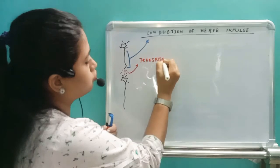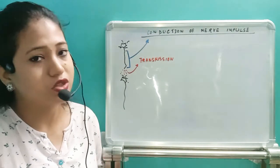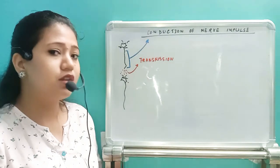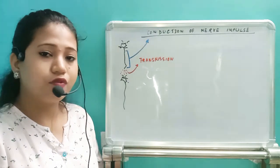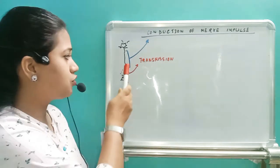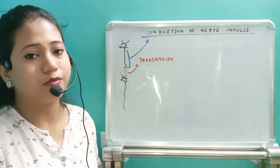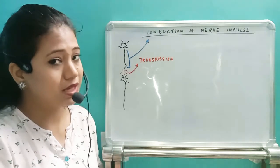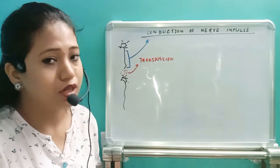So remember these two words — conduction and transmission. We have two mechanisms: conduction of nerve impulse and transmission of nerve impulse. First, we will see the conduction of nerve impulse — that means within the neuron, how the impulse moves. Then we will see transmission, from one axon of a neuron transmitting the impulse to the dendrite of the next neuron. So let's start the conduction of nerve impulse — the nerve impulse propagating within the same neuron.